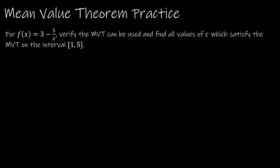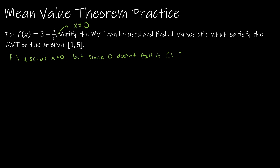Let's take a look at another question — this one is not a polynomial function. This is a rational function, and the denominator cannot equal 0. So x cannot equal 0. So f is discontinuous at x = 0, but since 0 doesn't fall in the interval 1 to 5, f is continuous and differentiable on [1, 5]. So yes, this is a continuous differentiable function on [1, 5], and we're okay.